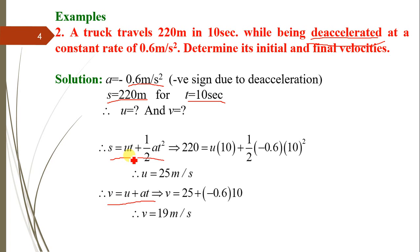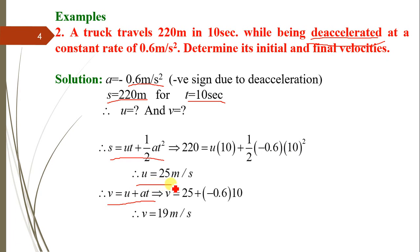Using s = ut + ½at²: 220 = u(10) + ½(−0.6)(10)², which gives the initial velocity u = 25 m/s.